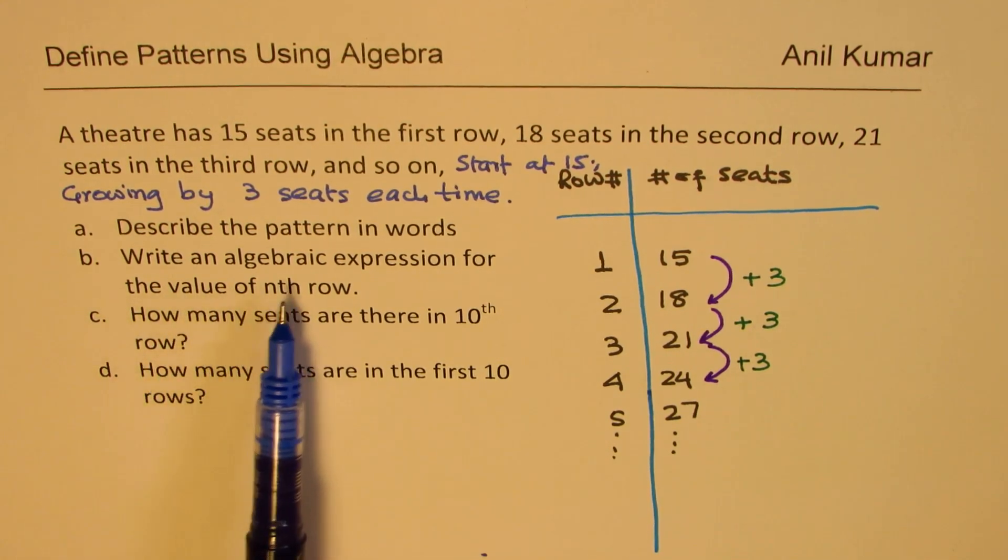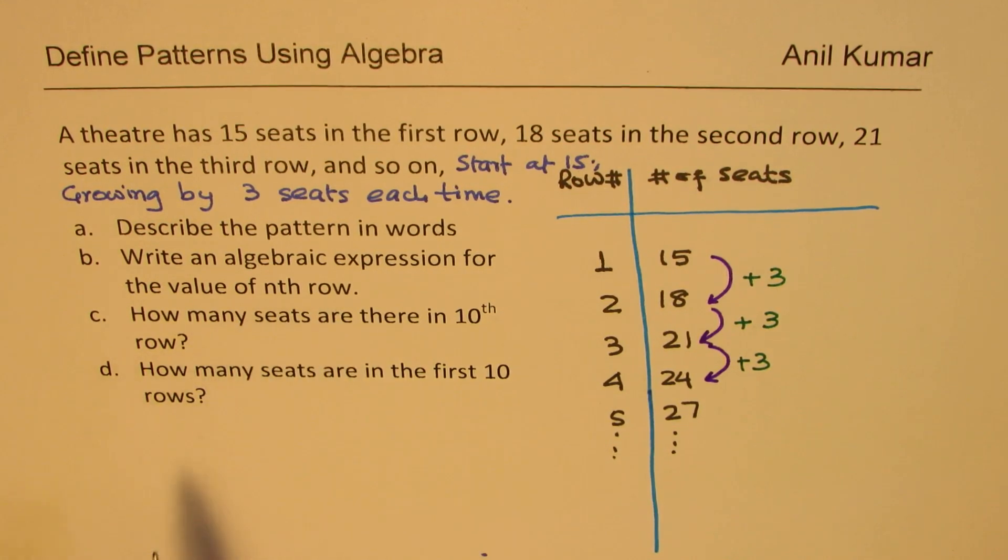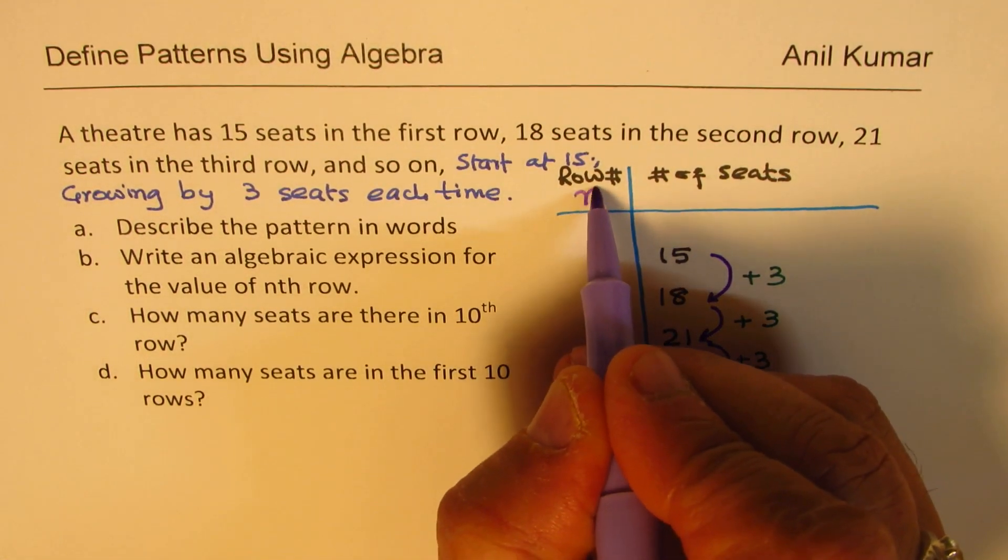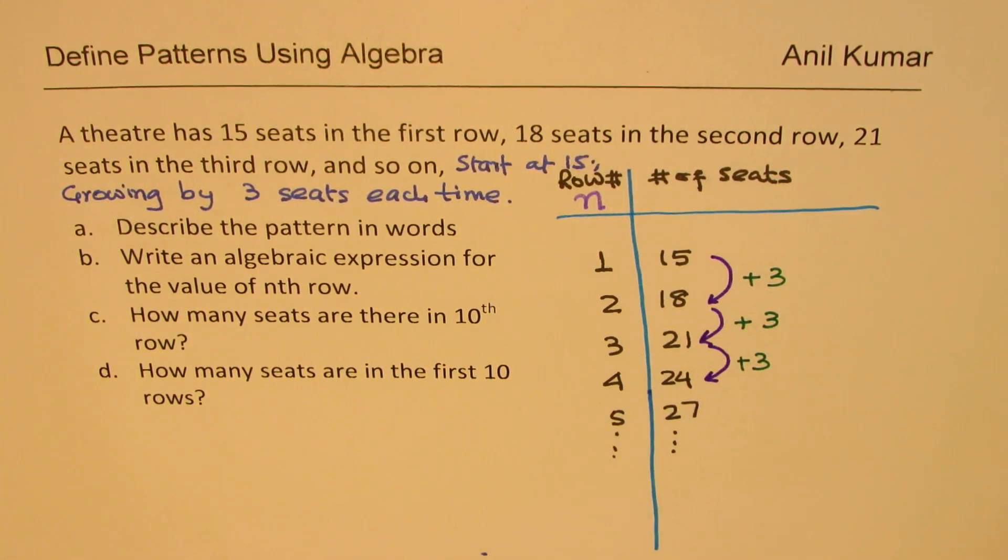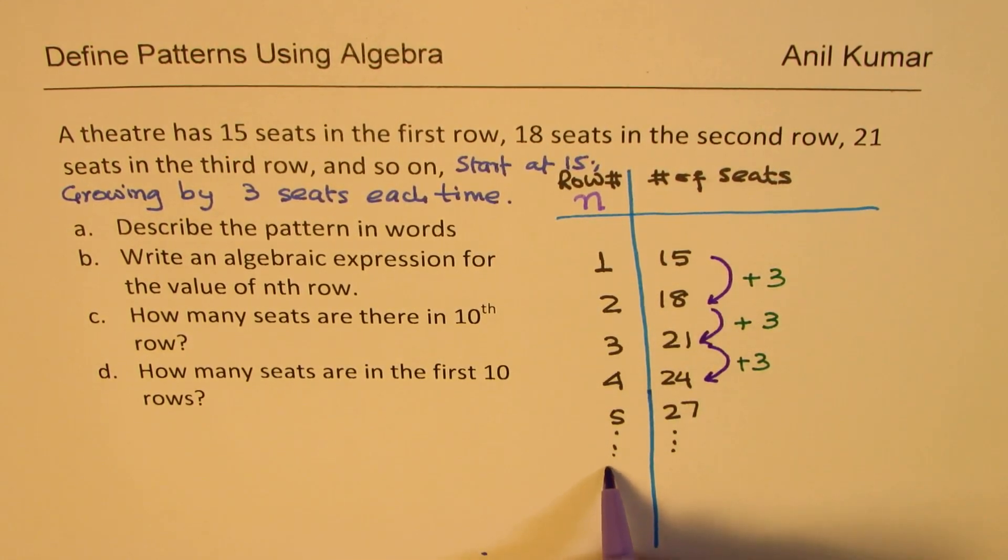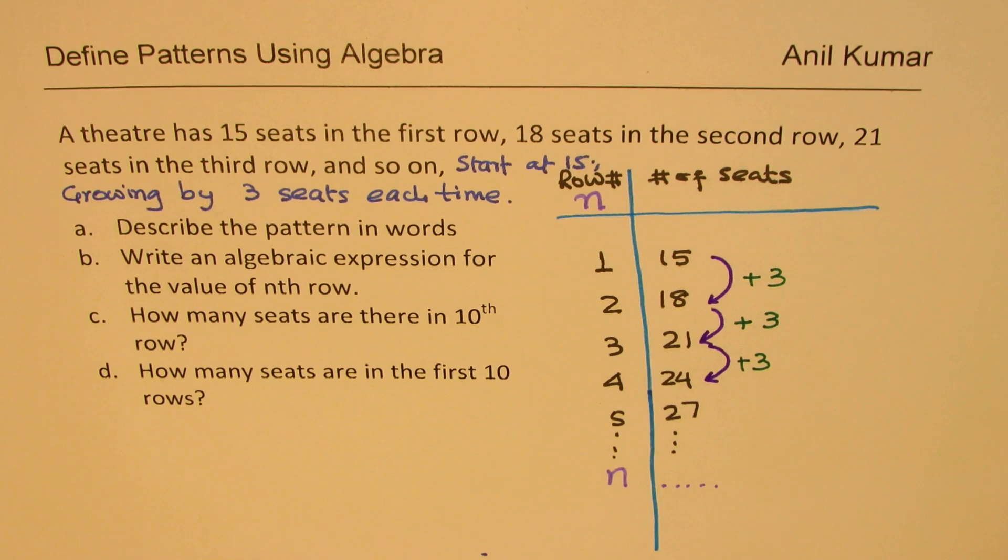Part B is write an algebraic expression for the value of nth row. So in general, what we do is that we give alphabetical letters, lowercase normally, for variables. Let's say n. So that becomes now the nth row. First row, second row, third row, and so on. And in each row, now we have seat numbers. Now if I have row number n, we have to write down how many seats will there be? How do I get this number? That is the question.